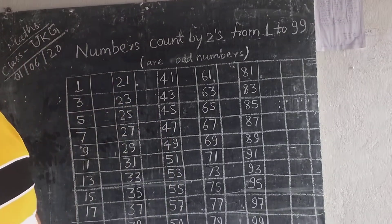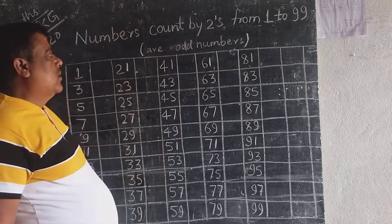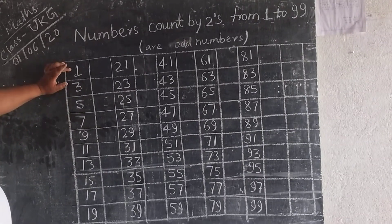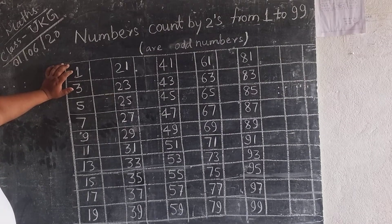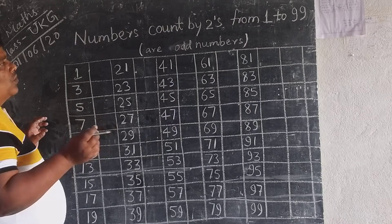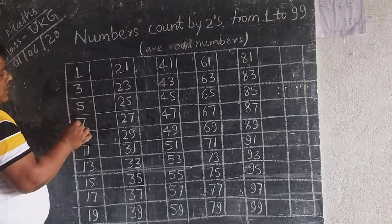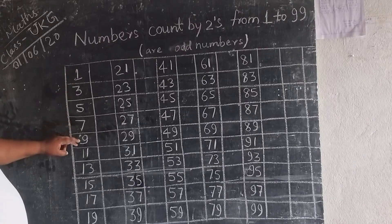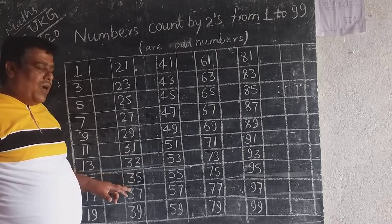We will show you the numbers count by 2 from 1 to 99, and we will show you the numbers count by 2 from 1 to 100.